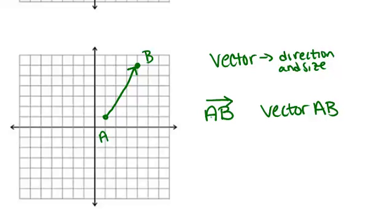Notice that I started with letter A. You have to start with your initial point whenever you're writing a vector. So I had to start with A. I couldn't have said BA. I had to say AB. And B is called your terminal point and that's where the vector ends up.